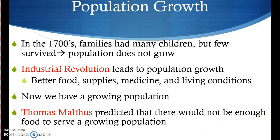So, population growth. First, we want to go back to the beginning. In the 1700s, families had many, many kids. The reason why they had so many kids is because very few of them would survive. So it was really hard for the population to actually grow, because we didn't know who was going to survive. Unfortunately, miscarriages were common. Infants and toddlers would die at a young age. Diseases were spread easily.